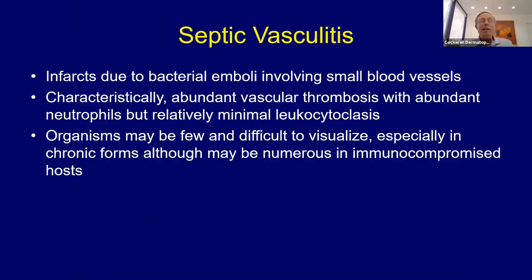Immunofluorescence doesn't generally rescue you in the diagnosis. For vasculitis associated with lupus or a drug eruption, immunofluorescence is very commonly negative. Usually by the time you can see it with immunofluorescence, it's already obvious clinically and histologically. So it's helpful when positive; if negative, just ignore it.